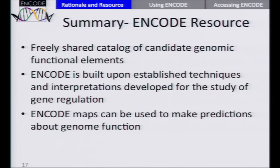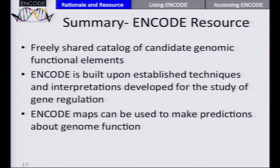In summary, the ENCODE resource is a freely shared catalog of candidate regulatory elements. ENCODE is built upon years of study of gene regulation, which is a very solid foundation. One can use ENCODE maps to make predictions about gene regulation or the role of genetic variation in human disease. With that, I'll transition to the next part: how could one use ENCODE to understand the role of genetic variants in human disease?